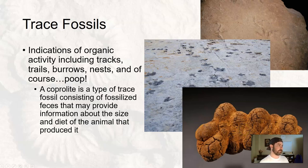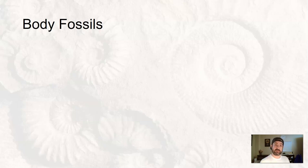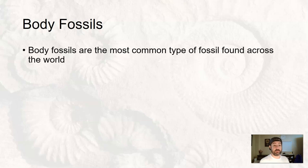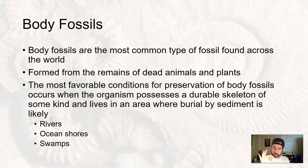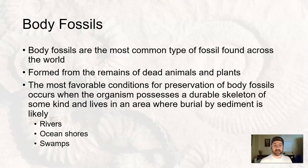So those are trace fossils — not the organisms themselves, but an indication that there were organisms here. Everything poops, all animals poop, so something was here. Then we have body fossils. This is kind of what most people think about when thinking about fossils. It's the most common type of fossil from across the world, formed from the actual dead remains of animals and plants, oftentimes in sedimentary rocks. The most favorable conditions for preservation of body fossils occur when the organism possesses some sort of durable skeleton or durable structure and lives in an area where burial by sediment is likely.